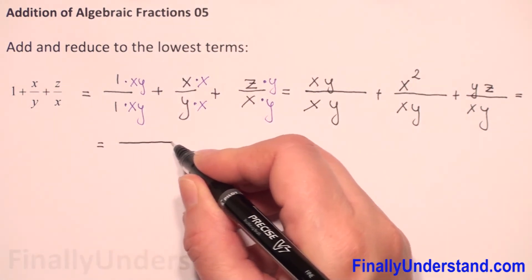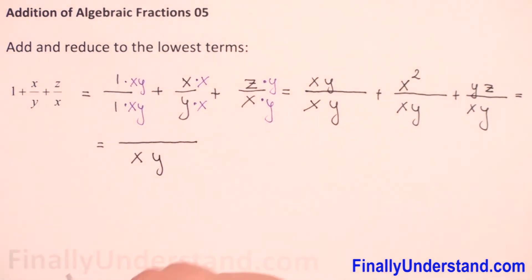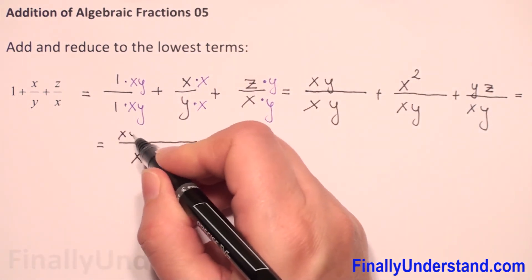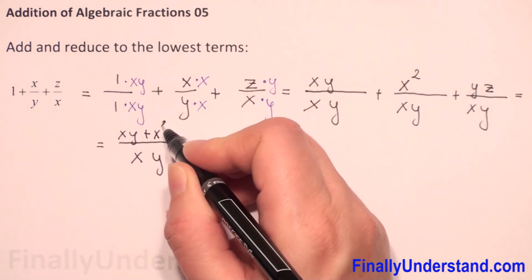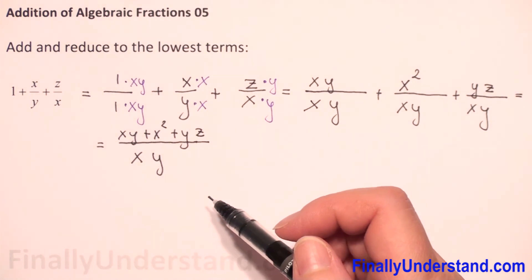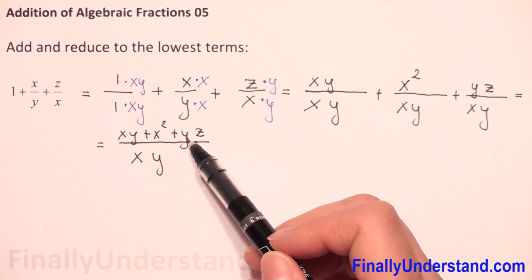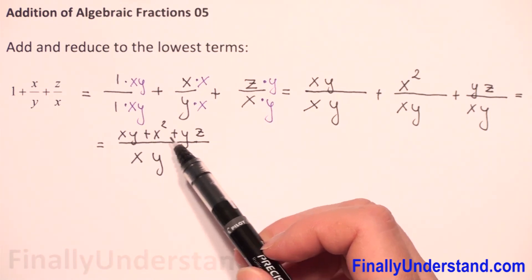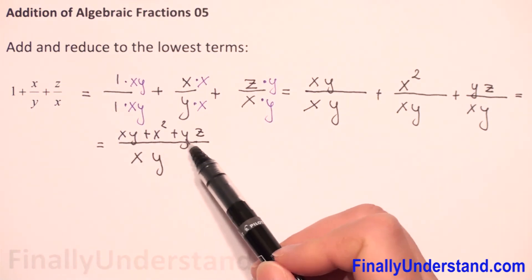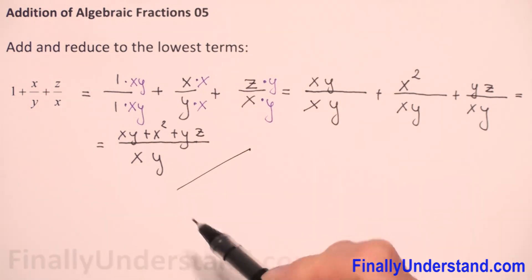Now this is equal — we have the same denominators, so I will copy the denominator xy and add the numerators. We have xy plus x squared plus yz. Next we have to check if we can reduce something. Since we have addition in the numerator, we need to check if we can factorize. We have xy, x squared, and yz — every term is different, so we cannot factorize anything. This is the final solution.